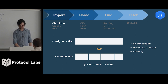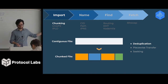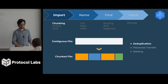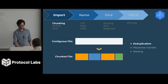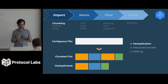First of all, deduplication. When we import a file, we may end up seeing that two pieces are the same piece — the two orange pieces are the same. Because we chunk files like this, we can actually just not store the second piece, and only store the orange piece once.